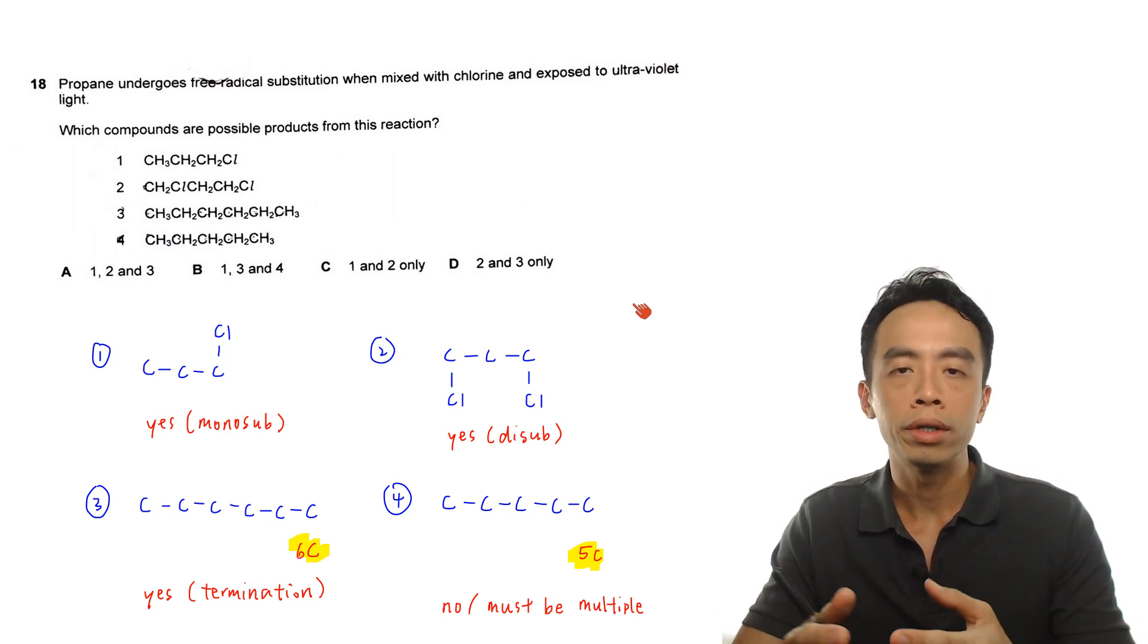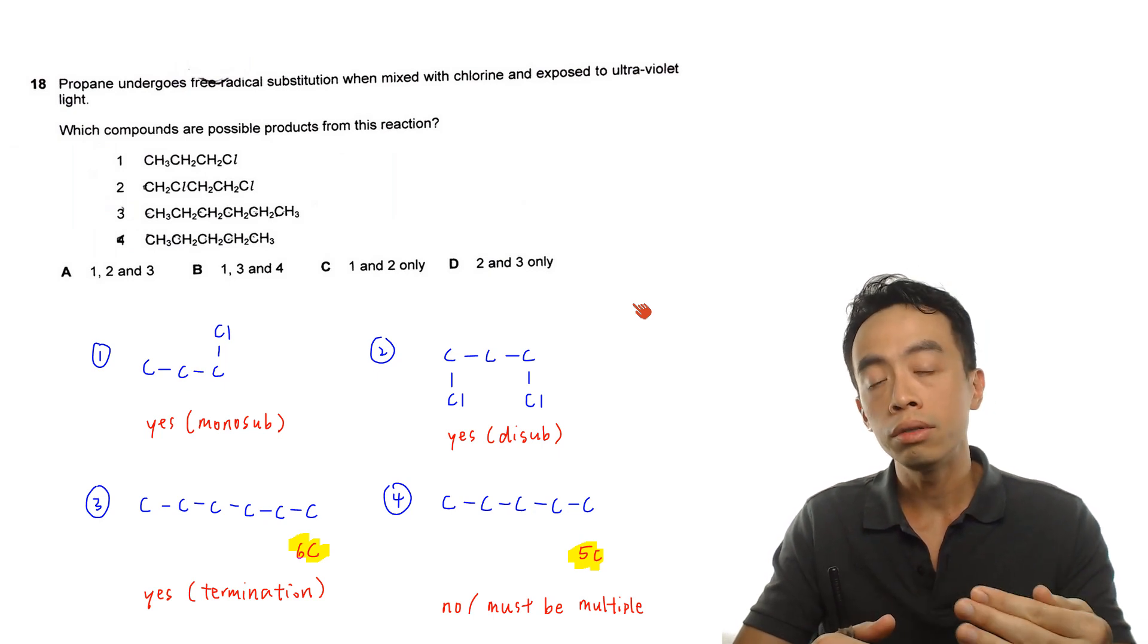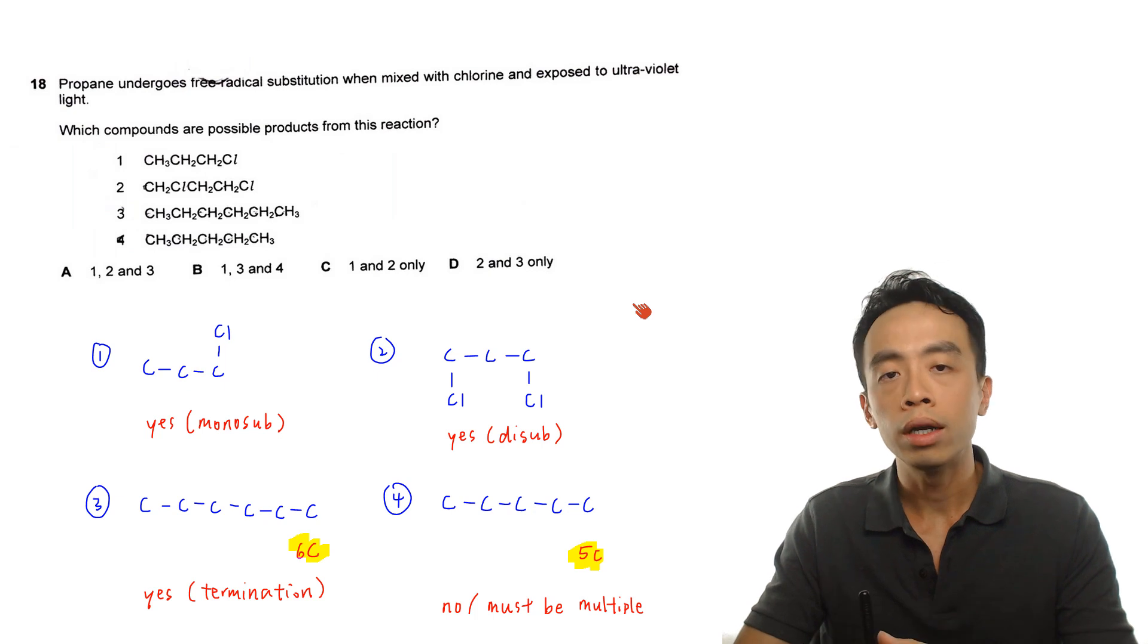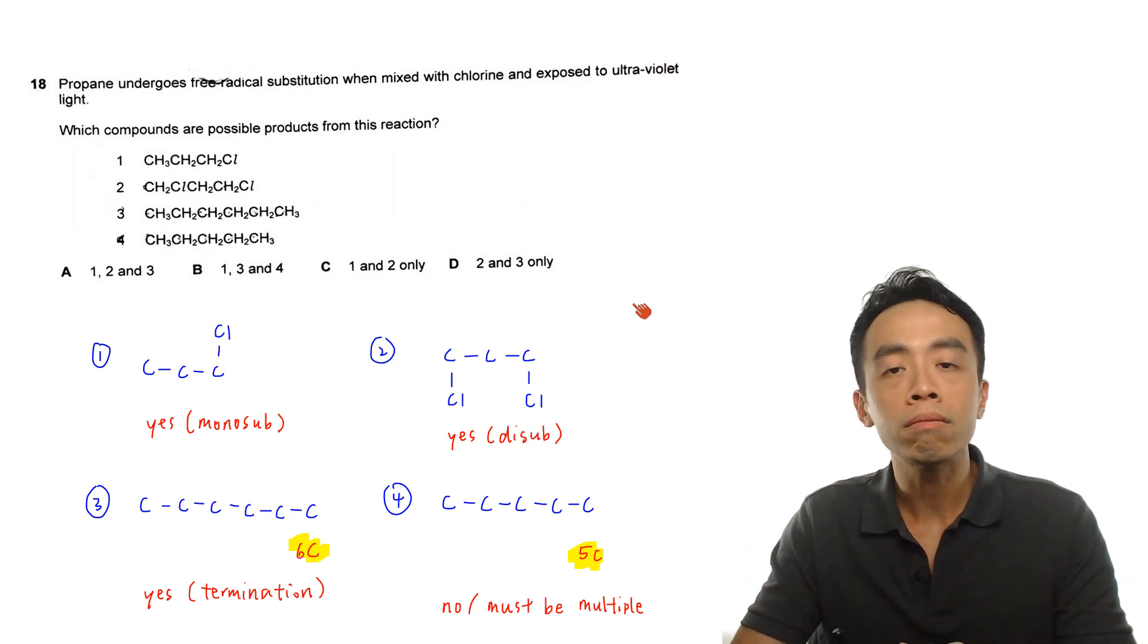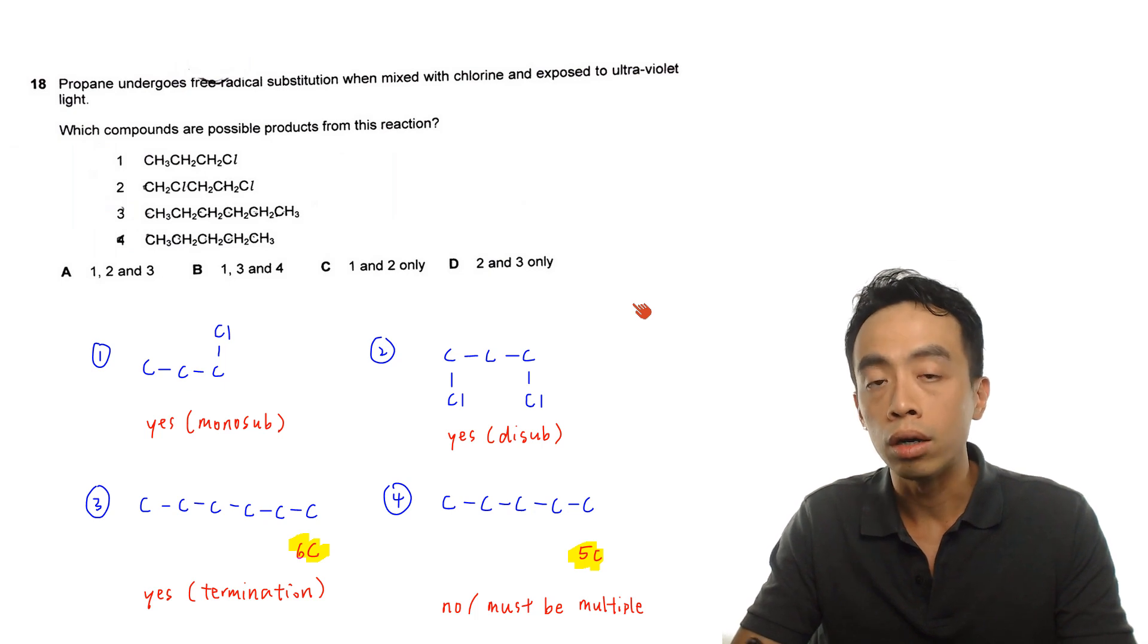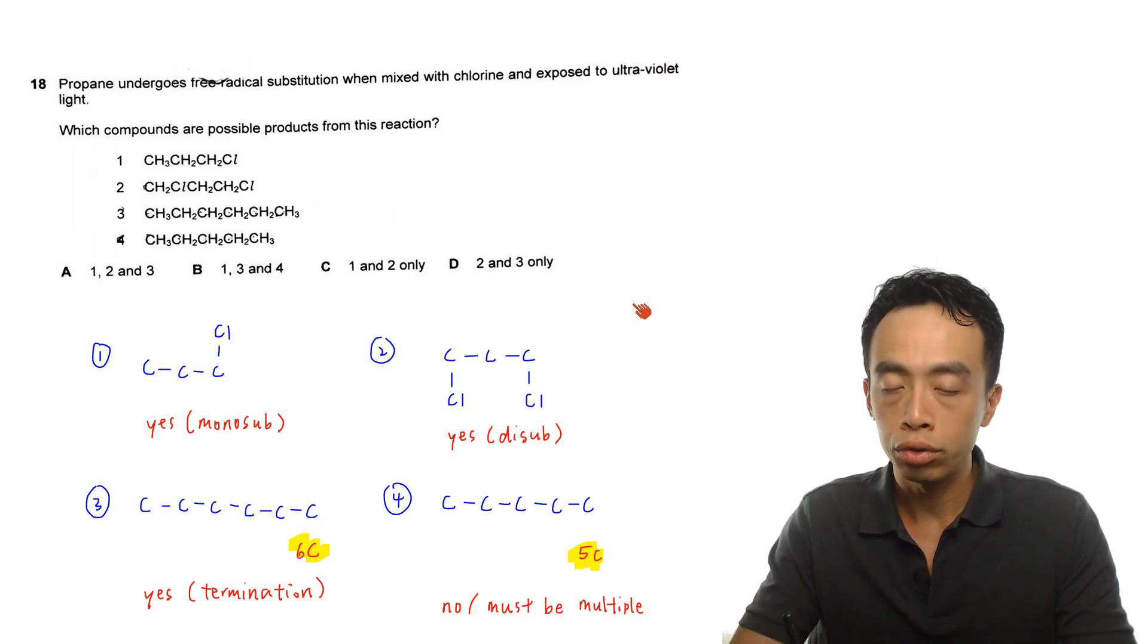And the second step is our propagation step, where the halogen radicals attack our alkane, and then after a series of steps, subsequently it forms the product that we want. Of course, we would not want to go through this in detail. Later we will talk about where we can access the detailed mechanism involving free radical substitution if we are interested. Then finally, we have the termination step, which is the final step, where two radicals combine together to form the stable product.